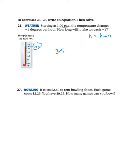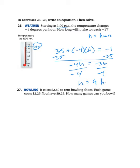And at 1 o'clock, it looks like we're at 35 degrees. So, if we start at 35 degrees and we add negative 4 degrees for every hour, negative 4 times H, how many hours will it take for this to equal negative 1? So, I can go ahead and subtract 35 from each side. I'm going to write my negative 4H equals negative 36. Then, I'm going to divide by negative 4 and we get H equals 9. So, we have 9 hours.